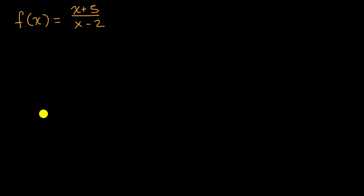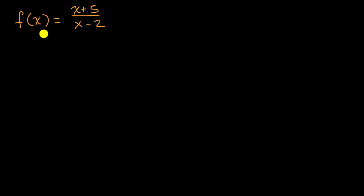All right, now let's do it together. The domain is the set of all x values that if we input into this function, we're going to get a legitimate output — a legitimate f of x. So what's the situation where we would not get a legitimate f of x? Well, if we input an x value that makes the denominator equal to zero, then we're going to divide by zero and that's going to be undefined.